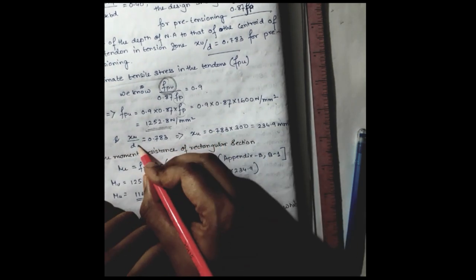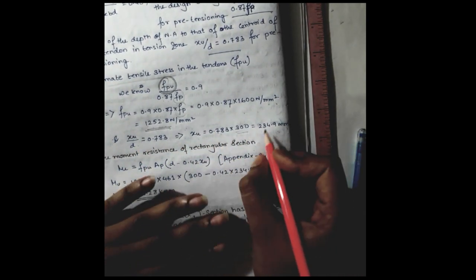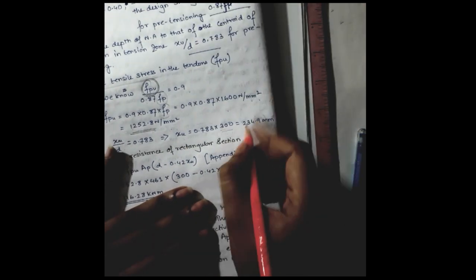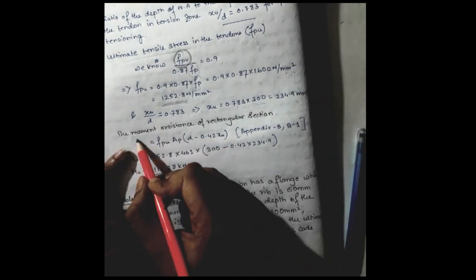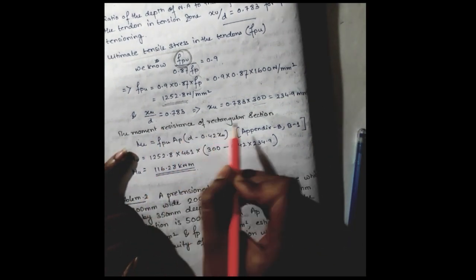Where xu will be 0.783 times d, which is 300, so xu will be 234.9 millimeter.